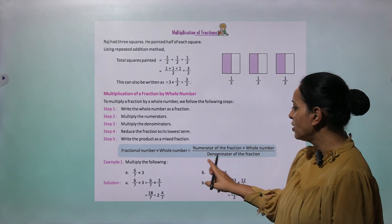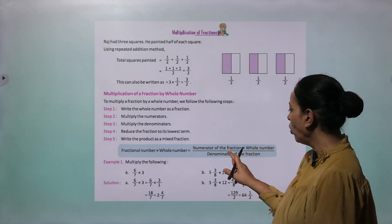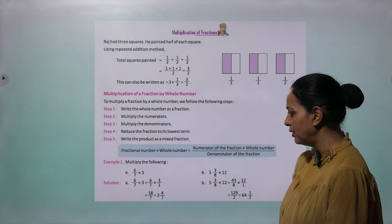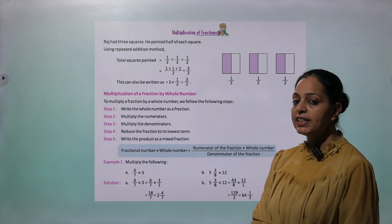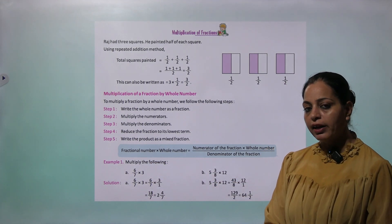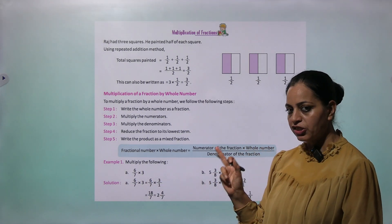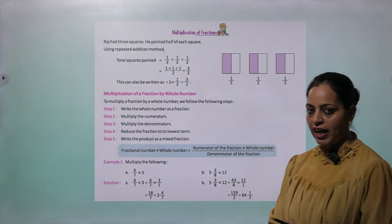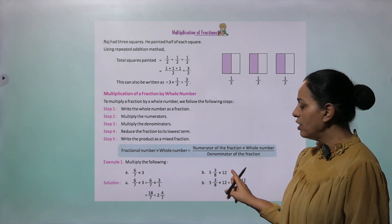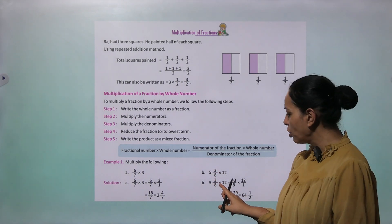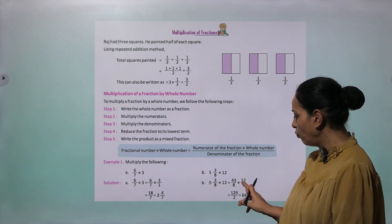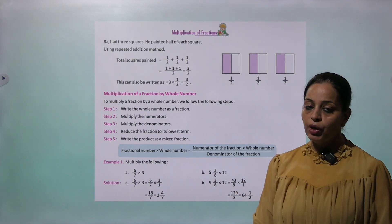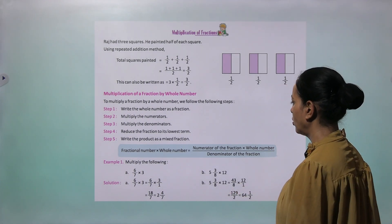The formula: fraction times whole number equals numerator of fraction times whole number, upon denominator. Example 1a: Multiply 6 by 7 into 3. Numerator times whole number: 6 into 3 upon 7 equals 18 upon 7. Convert to mixed fraction. Example 1b: Multiply 5 whole 3 by 8 into 12. Change to improper fraction: 43 by 8 into 12. Cancel 8 and 12 — you get 129 by 2. Convert to mixed fraction.